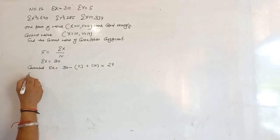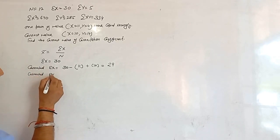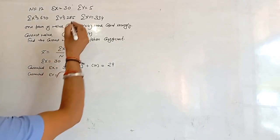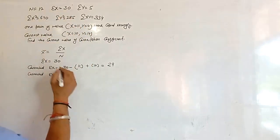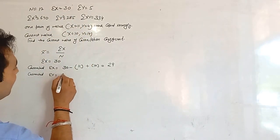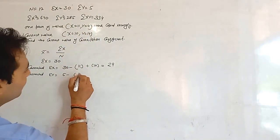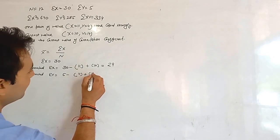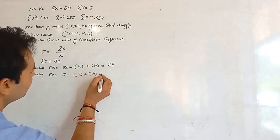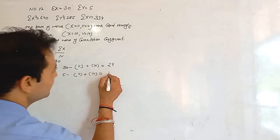Now we calculate the correct value of summation y: 5 minus the incorrect value 4 plus the correct value 40, that is 41.